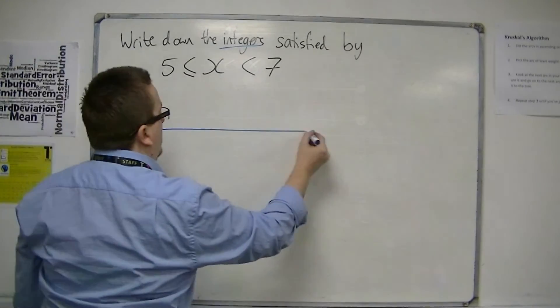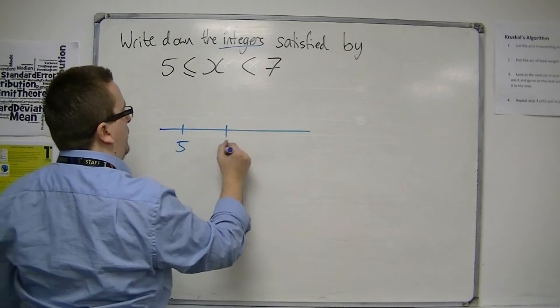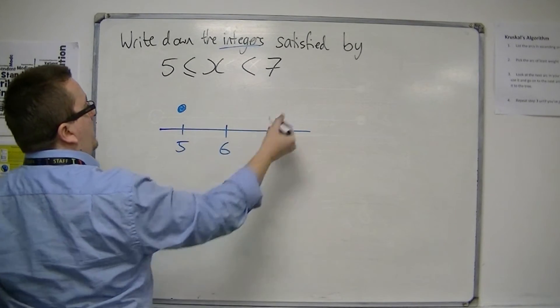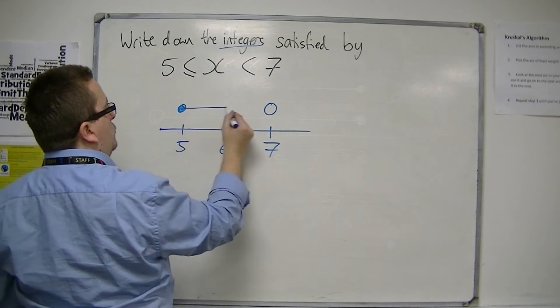so 5 is less than or equal to x is less than 7. So first of all, draw a number line, 5, 6, 7, solid dot on the 5, hollow dot on the 7, draw a line,